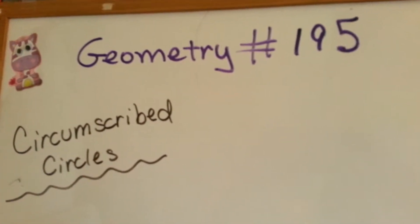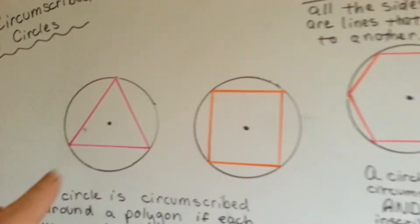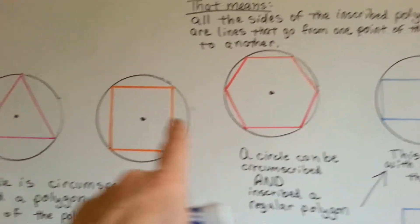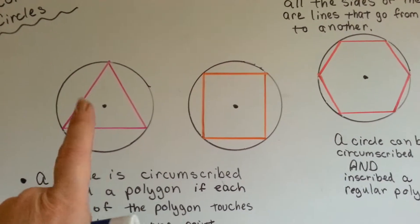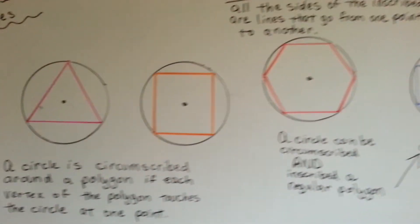Geometry 195, Circumscribed Circles. I've got a few drawings here of some circumscribed circles that are around some polygons: triangle, square, hexagon. And then we'll talk about this rectangle over here.